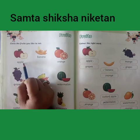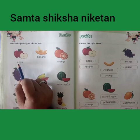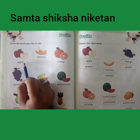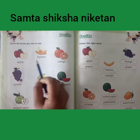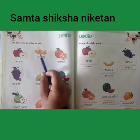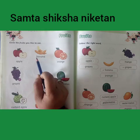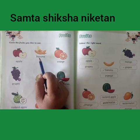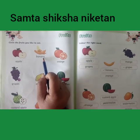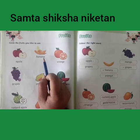Okay, now tell me what is this? This is apple. A, double P, L, E — apple. What is this? Banana. B, A, N, A, N, A — banana.